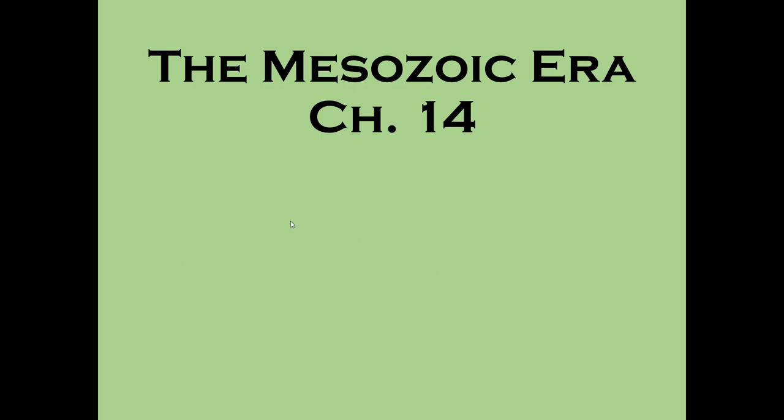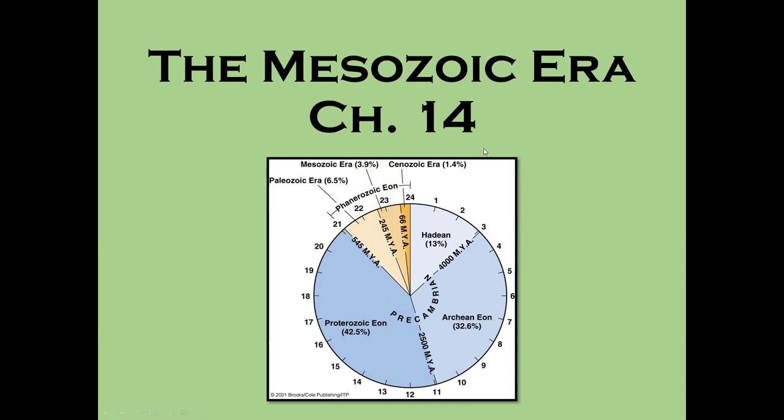We're on Unit 4, the last unit of the semester, starting with the Mesozoic era and then including the Cenozoic era, bringing us to the modern day. The Mesozoic era is covered in chapter 17 or chapter 14 of your textbook. On the geologic time wheel it covers only 3.9% of Earth's history, yet it's arguably the time period people are most interested in — because it includes when dinosaurs roamed the earth.